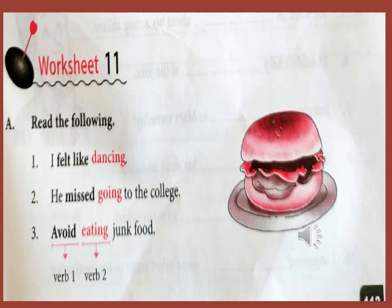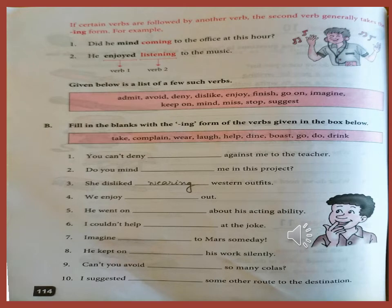Dear students, let us read the following. 'I felt like dancing.' 'He missed going to college.' 'Avoid eating junk food.' Here, 'avoid' is verb 1 and 'eating' is verb 2. If certain verbs are followed by another verb, the second verb generally takes the -ing form. For example: 'Did he mind coming to the office at this hour?' 'He enjoyed listening to the music.' Here, as you can see, another verb is followed by a second verb, therefore the -ing form is used.